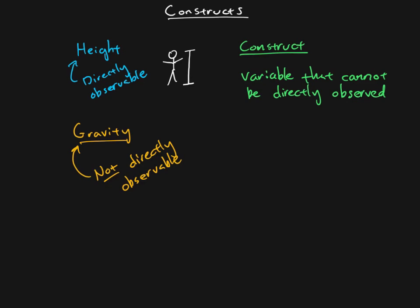But another thing you will often see is you'll see constructs defined as explanatory, meaning like I was just saying, they're used to explain things. So we would say a construct is an explanatory variable that can't be directly observed.